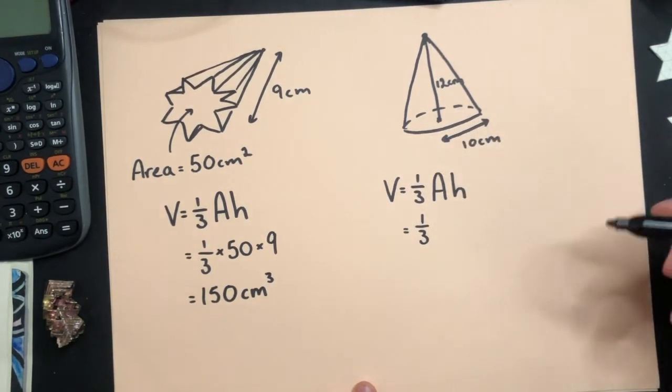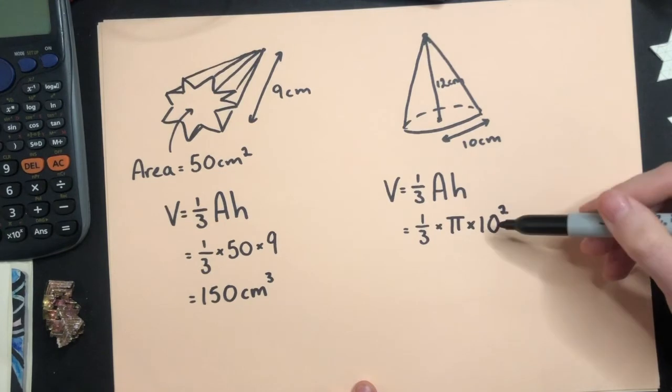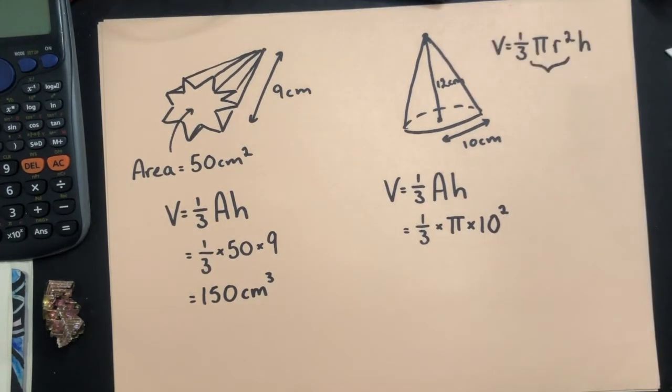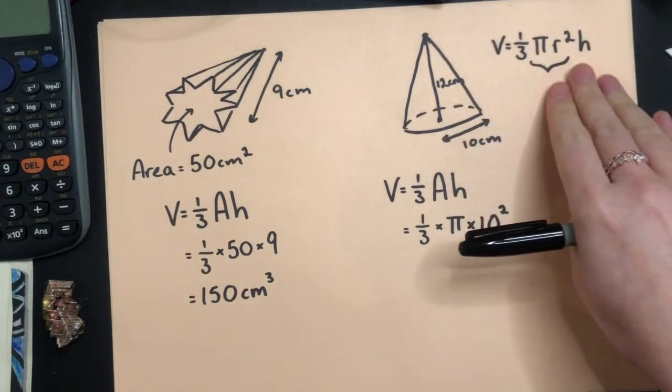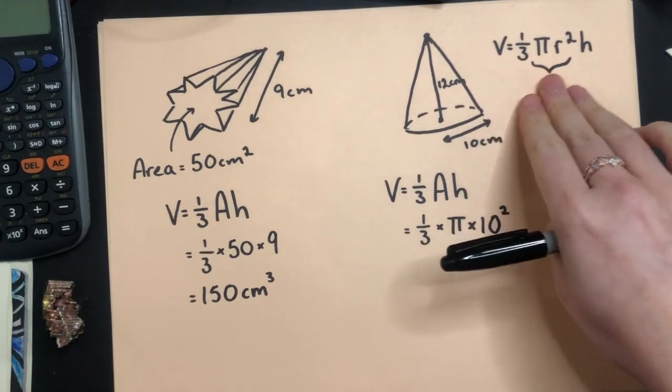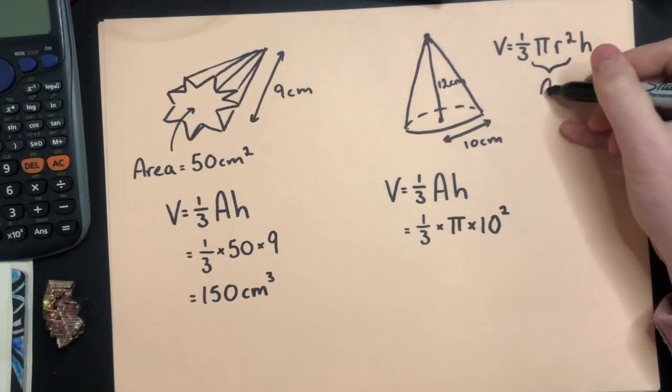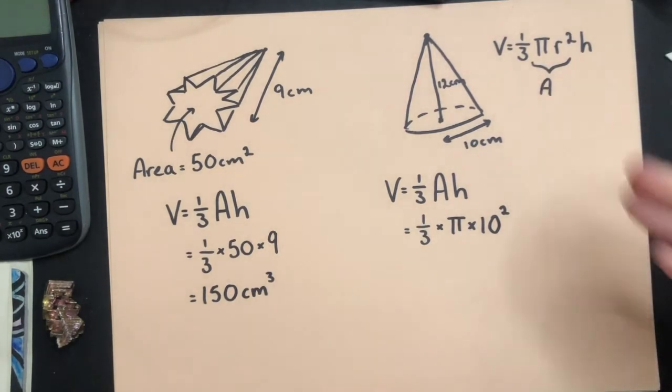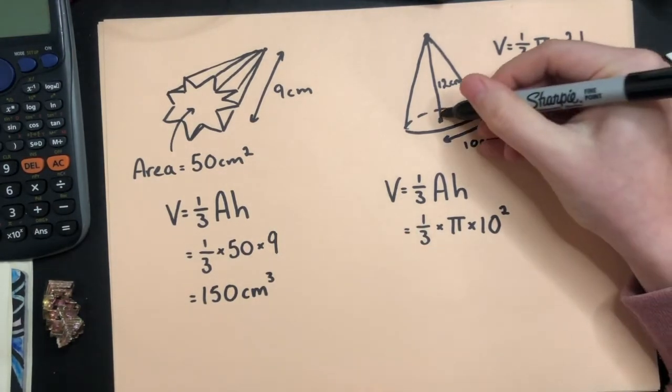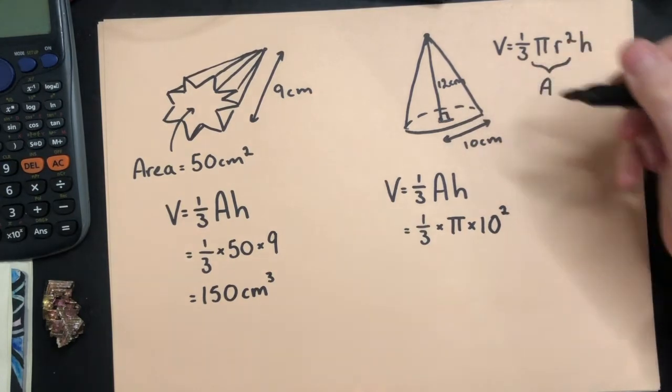because this is a circle, I'm going to do pi r squared. My radius is 10, so that's in there. Often in formula sheets, you'll be given the volume of a cone as V equals one-third pi r squared h. It's just that that pi r squared is the area of the face, because a cone is a circle pyramid. And the height for this, looking at that perpendicular length there, is 12.